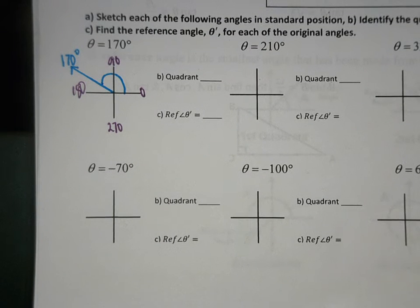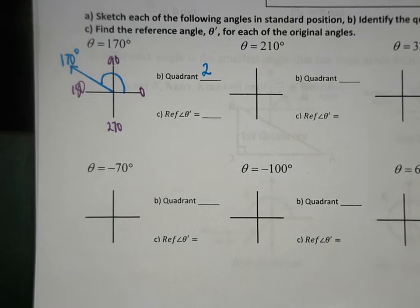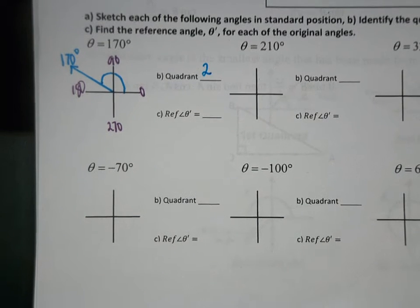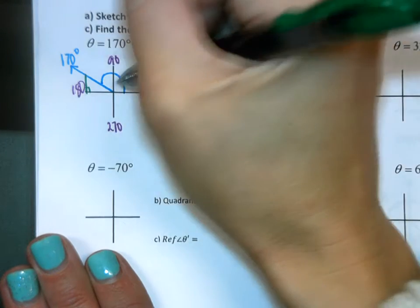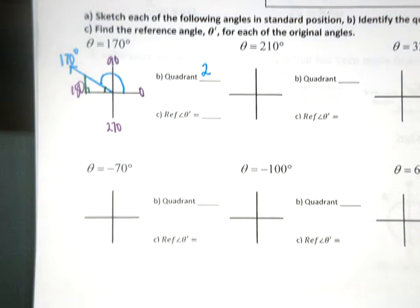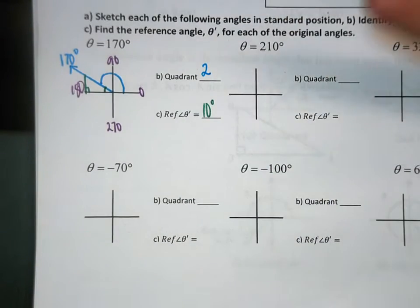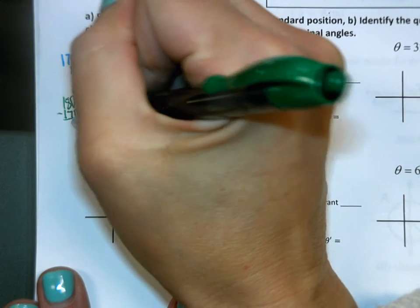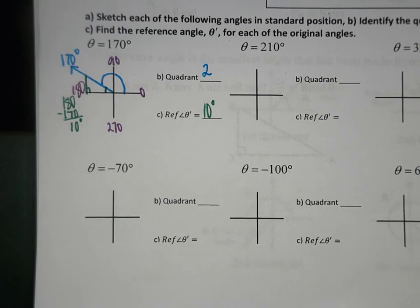Part B says identify the quadrant in which the terminating ray resides. What quadrant is 170 in? Quadrant 2. Now for the reference angle — it always goes to the x-axis and is always less than 90 degrees. This reference angle makes a 90-degree angle with the x-axis. What's that little piece there? 10 degrees. How? You take 180 minus 170 to get 10 degrees.